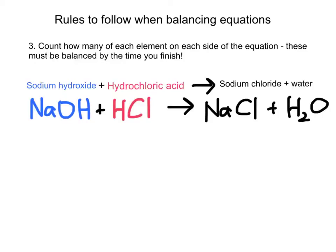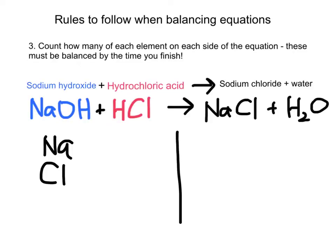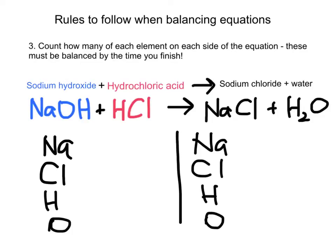The easiest way to do this is to draw a line down the middle of the equation and write out each individual element on either side. I find it better to do the metal and non-metal first, then hydrogens and oxygens subsequently. On the left side we have sodium — one atom; chloride — one. For hydrogen, there's one in the hydroxide and a second in the hydrochloric acid, so two total. And oxygen — just one.